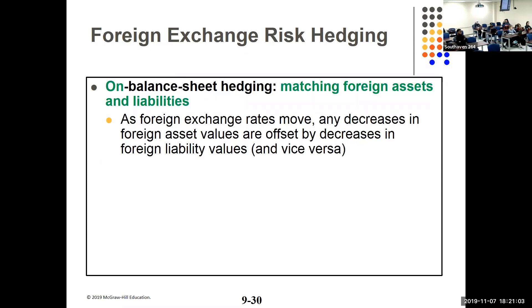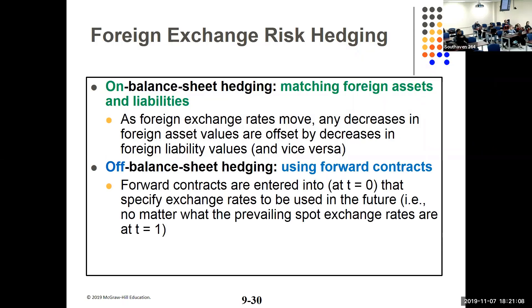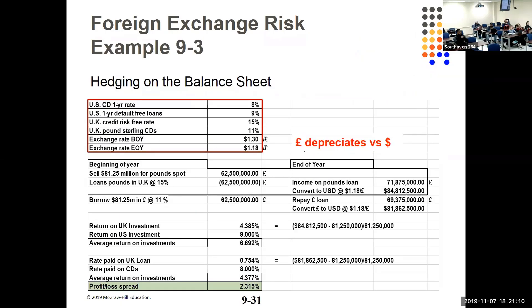On balance sheet hedging: same setup as before. At the beginning of the year they convert $81.25 million to pounds and loan it out. At end of year they get the money back and convert back, but they also have to repay the loan borrowed at 11%. Overall they make $2.315 million.